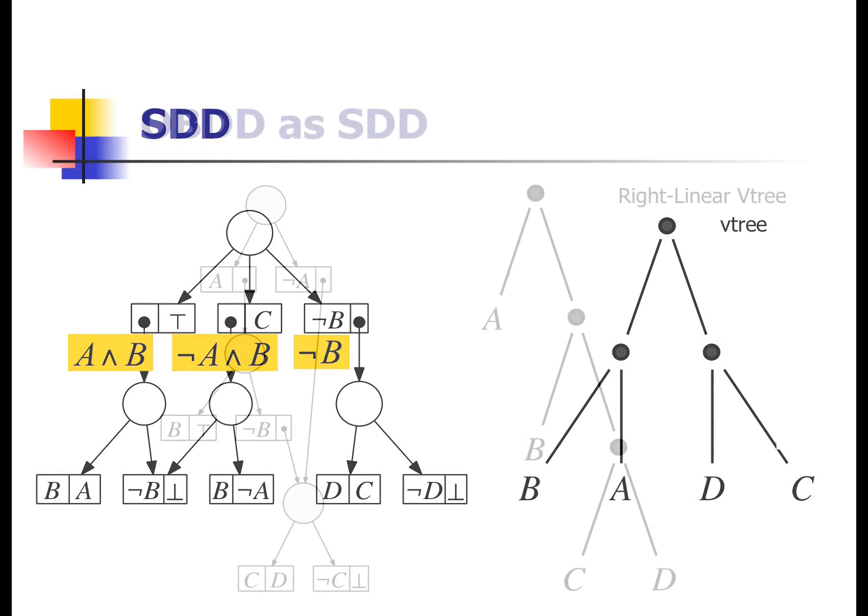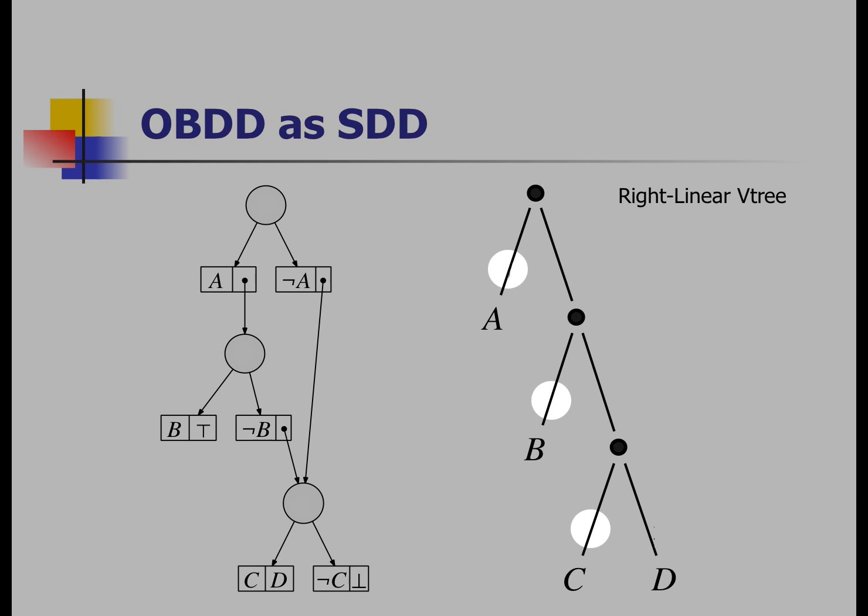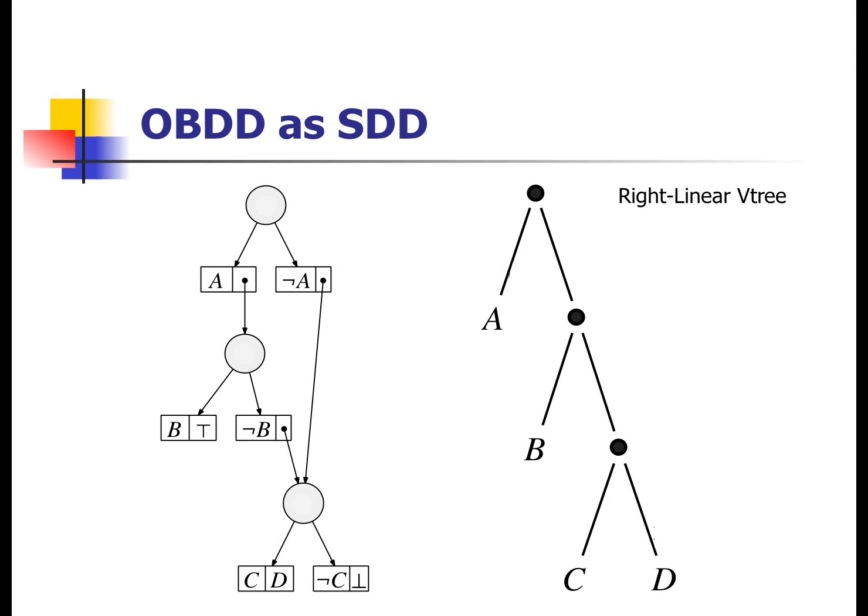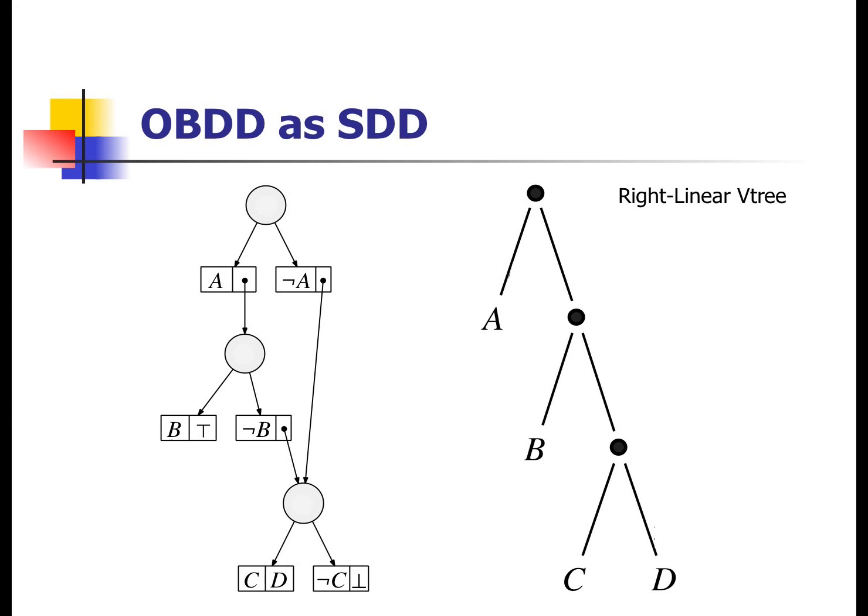All right? So that's basically the SDD. You'll see the formal definition in the paper, and you'll see in a little bit how the OBDD is a special case of this in a very precise sense. In fact, if we use what we call a right linear V-tree that look like this, where the left branch of every node is always a single variable, you will basically get OBDDs, because primes in that case will almost be over a single variable. That is the literal A or not A, and you get the guy that looks like this, which you've seen. So notation is just an OBDD.